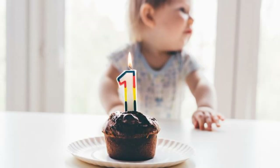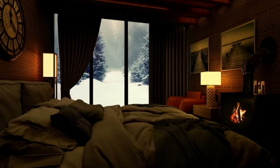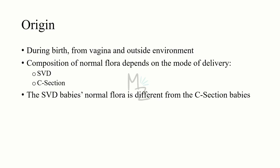Origin. During birth from vagina and the outside environment — environment includes air, food, and blankets, or the hands of the physicians involved in delivering the baby. Normal flora's composition depends on the mode of delivery: SVD (spontaneous vaginal delivery) or C-section (cesarean section). If delivered through SVD, the microorganisms of the vagina will become part of the normal flora of the baby. If delivered through C-section, the baby will acquire different organisms. So babies delivered through SVD have a different normal flora from those delivered through C-section.